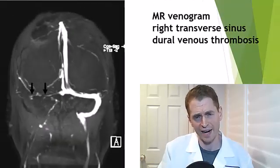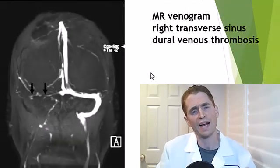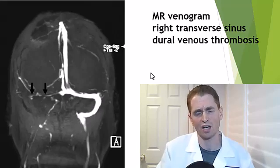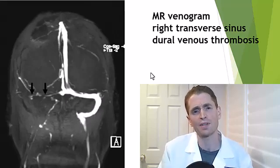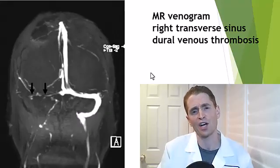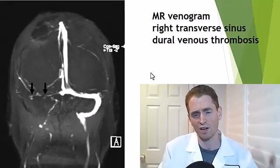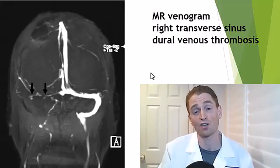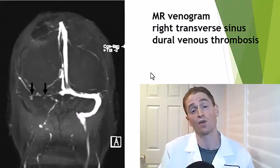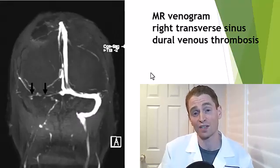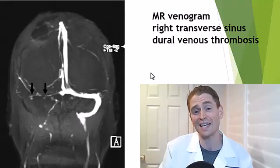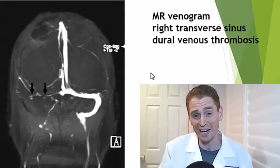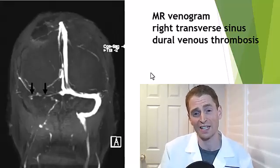Next we'll shift to venography. This is an MR magnetic resonance venogram. With MR angiography and venography, it's typically done without contrast dye — the technique uses the movement of blood through the vessels, for instance through time-of-flight MR angiography, to create images. CT angiography and venography, because it actually uses dye, is a little bit more accurate in my experience.